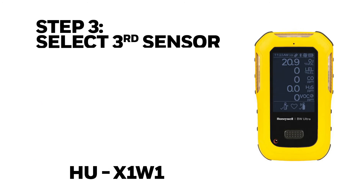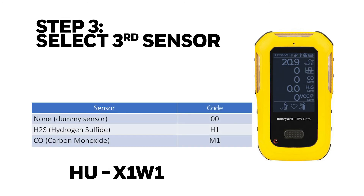Step 3: select the third sensor. This step is to choose a sensor for slot number 3. In this case we can have a dummy sensor, a hydrogen sulfide sensor, or a carbon monoxide sensor. In this case I'm going to choose the hydrogen sulfide sensor.